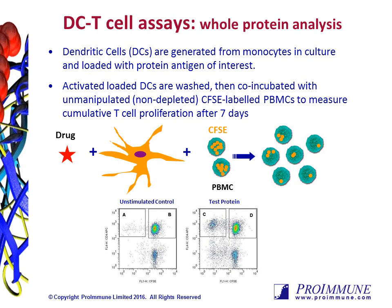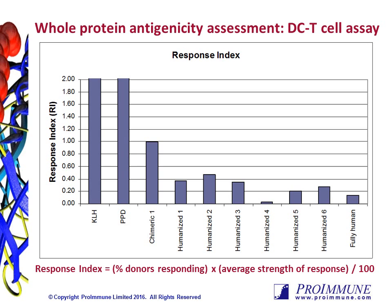In these representative dot plots, box C represents the proliferating CD4-positive CFSE-low T-cells in response to the test protein, which is compared with box A in the unstimulated control. Those CFSE levels are used to calculate a response index, which is the percent of donors responding multiplied by the average strength of response, over 100. The data generated by the DC T-cell assay allows you to directly compare the relative T-cell epitope content among the antibody variants and rank them accordingly based on the response index. With this highly sensitive assay, even subtle differences can be detected — for example, a few amino acid differences.